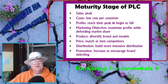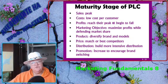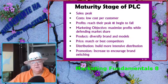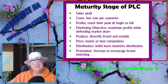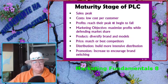At the maturity stage of the product life cycle, sales peak, costs are low per consumer, and profits reach their peak and begin to fall. The marketing objective is to maximize profits while defending market share. You offer diversity in brands and models, price to match or beat competitors, build more intensive distribution, and increase promotion to encourage brand switching.